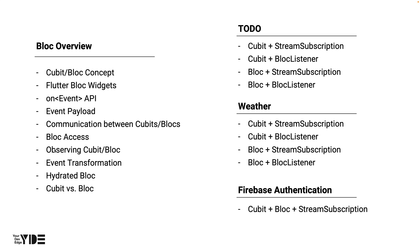In Flutter Bloc, there is a function that can track what is happening in Cubit or Bloc. We'll look at that function. Next, in the case of Bloc, the event is a stream, and we'll cover what to do when we need to pre-process the event — that is, event transformation. We'll also learn about Hydrated Bloc, which provides a way to persist the state, and when to use Cubit versus Bloc — the two state management tools provided by Flutter Bloc.